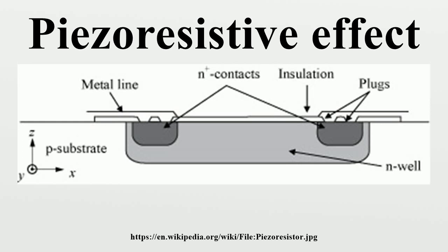In platinum alloys, for instance, piezo-resistivity is more than a factor of two larger, combining with the geometry effects to give a strain gauge sensitivity of up to more than three times as large as that due to geometry effects alone. Pure nickel's piezo-resistivity is minus 13 times larger, completely dwarfing and even reversing the sign of the geometry-induced resistance change.